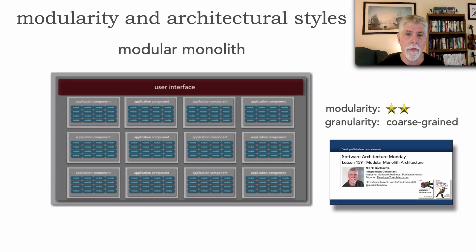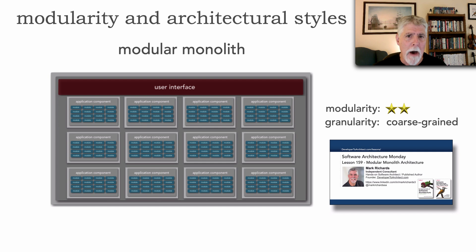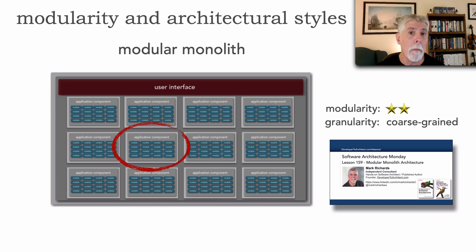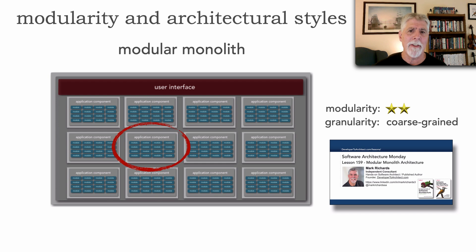Let's start with the modular monolith, which I covered in lesson 159. It does support a level of architectural modularity and I gave it two stars out of five — one being the lowest, five the highest. I gave it a two mostly because modularity in the modular monolith is supported through domain partitioning. Even though it's a monolithic deployment, delineating modules in terms of a domain or subdomain means these modules are usually coarse-grained, because they represent a domain or subdomain in the system.